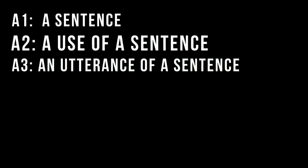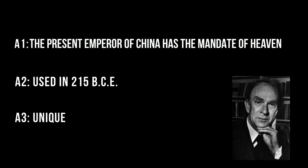And each utterance is, of course, unique. If two people in 215 BCE both said it, they would both be making the same use of the sentence, and still two separate utterances. Strawson says we can't talk about the truth or falsity of a sentence, only the truth or falsity of its particular usage. At the same time, the sentence itself is not about anything specifically — only the usage of the sentence is about something, because the sentence may be used in different contexts to be about different people. The purpose of language is for us as human beings to relate to our world.